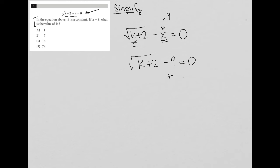I can now simplify this or solve it by adding 9 to both sides of the equation. So now I have square root of k plus 2 is equal to 9.